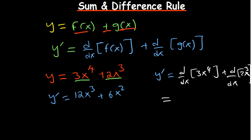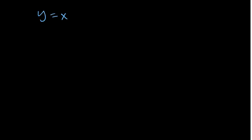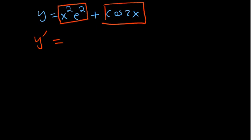Here's one more example which will make the necessity of the rule clear. If you have y equal to x squared times e to the power 2x plus cos(2x), this overall function has two parts that can be treated as separate functions. The sum and difference rule tells us — even if you have a negative sign there — that you can get y prime by differentiating each part separately and then adding the results together.